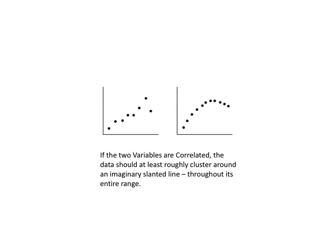Now why a slanted line? Well, a horizontal or vertical line would mean that one variable can increase or decrease while the other stays the same. That would mean no correlation.